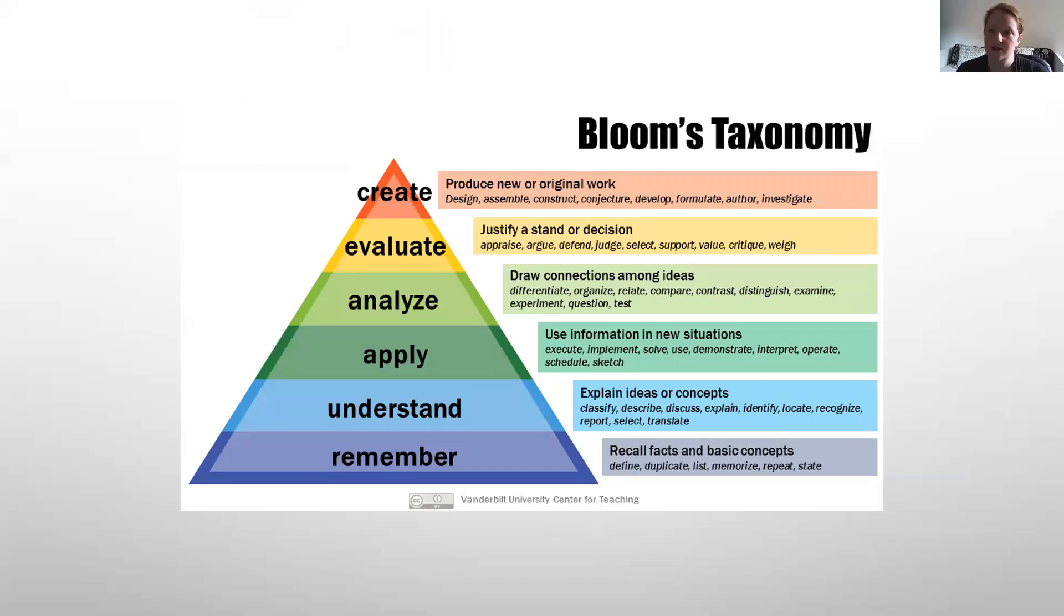Bloom's Taxonomy is a hierarchical order of cognitive processing, meaning that learning at the higher levels is dependent on having attained prerequisite knowledge and skills at the lower levels. It doesn't mean that one is better than the other. It just means that you need all of them in order to get all the way to the top. It's something that you build upon. The lower level skills require less cognitive processing, but they serve as an important base for the higher level learning.